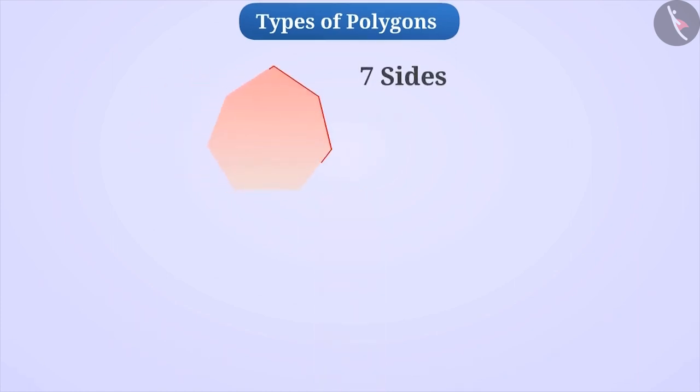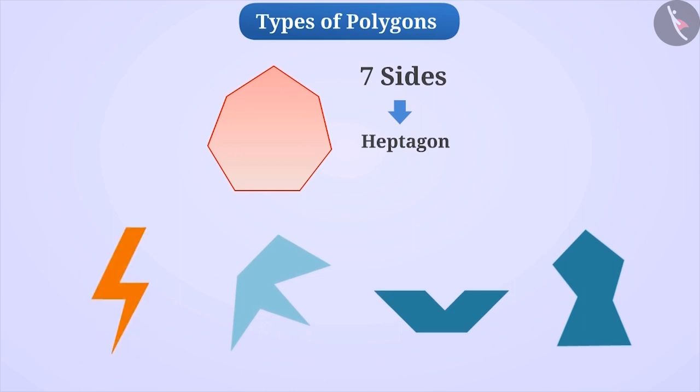A polygon with seven sides is called a heptagon. Here are some examples of a heptagon.